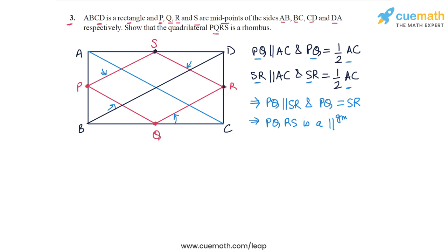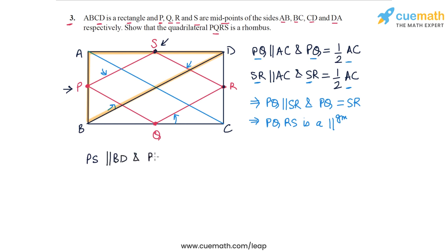To find the relationship of PS with BD, we will apply the midpoint theorem to triangle ABD — that's the triangle I am highlighting now. In this triangle P is the midpoint of AB and S is the midpoint of DA. So by the midpoint theorem we have PS is parallel to BD and PS is equal to half of BD.